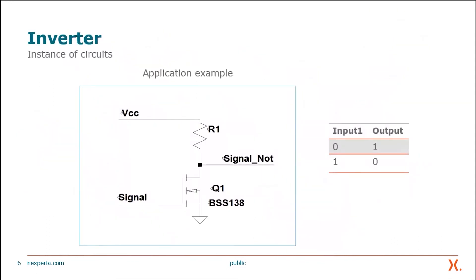One basic circuit is an inverter — just a simple small signal MOSFET. Whenever you put a signal on the input, it inverts the signal to the opposite. For instance, you have a low at the input, it inverts the output to a one, and vice versa: you have a one at the input, it inverts the signal into a low. With this simple inverter, you can build more complex logic circuitry.